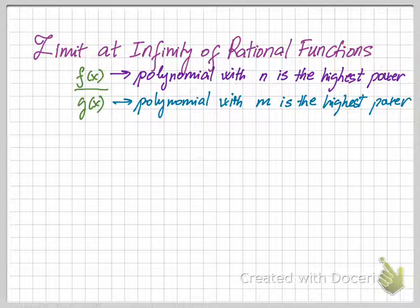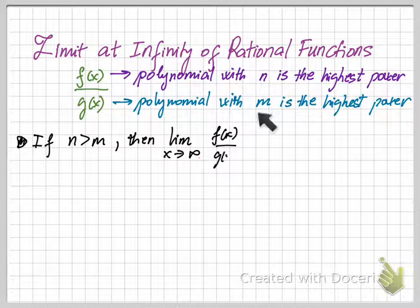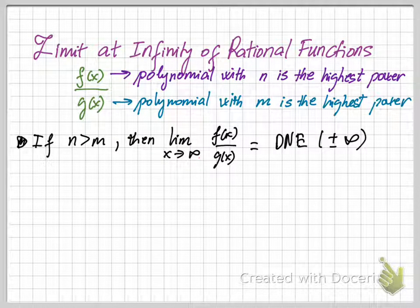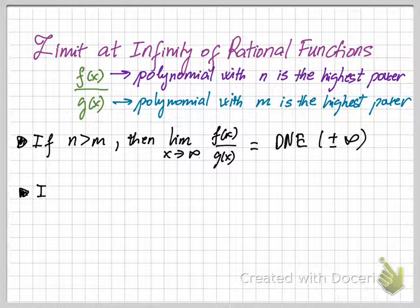So there are three cases for n and m. In the first case, if n is greater than m, then the limit of f of x divided by g of x when x goes to infinity is undefined or doesn't exist — or it can be positive infinity or negative infinity, depending on the sign of the leading coefficients of f of x and g of x.